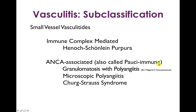This cluster of three ANCA-associated vasculitides are also sometimes called pauci-immune vasculitis — not because they're ANCA-associated, but because in contrast to Henoch-Schönlein purpura, when you do a biopsy you're not going to see immune complexes. The biopsy itself is pauci-immune, so it's just another way of lumping these diseases together.